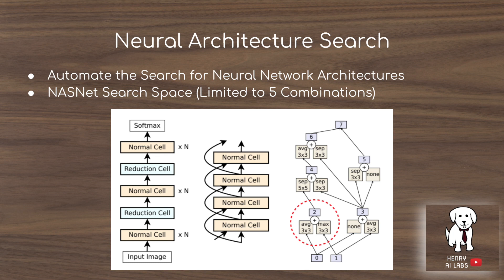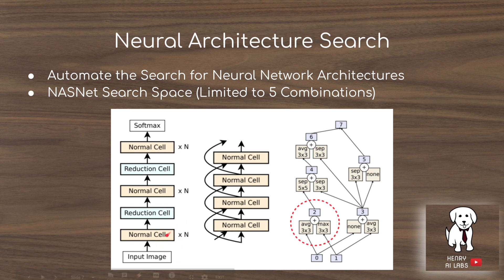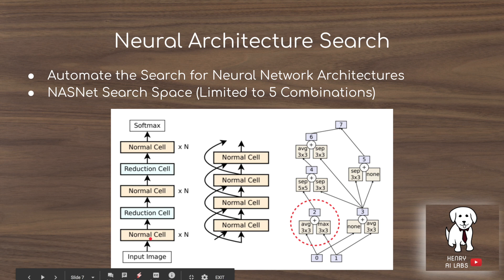The NasNet search space is composed of normal cells and reduction cells. A normal cell doesn't change the spatial resolution of the feature map, but the reduction cell halves it. So if you have a 32x32 feature map going into a normal cell, 32x32 comes out, whereas in a reduction cell, 16x16 would come out.